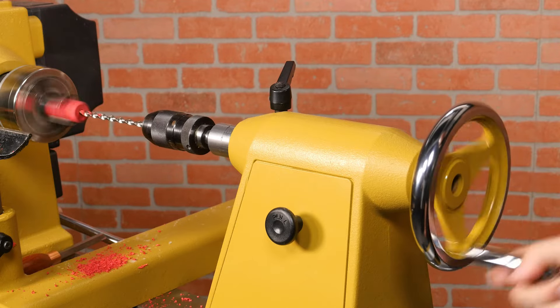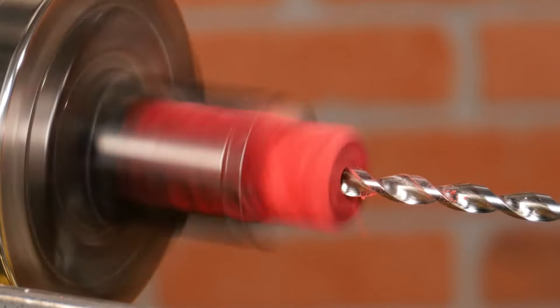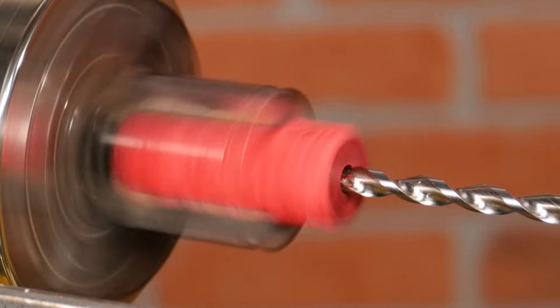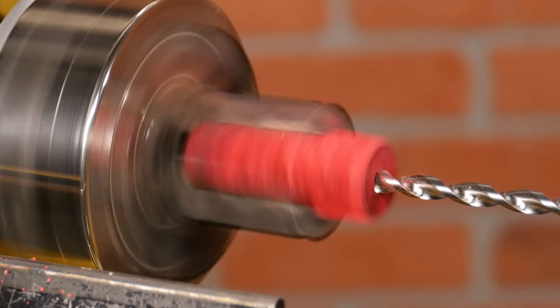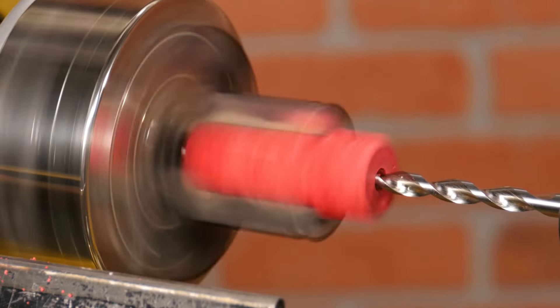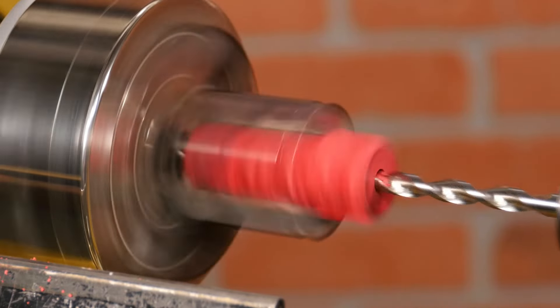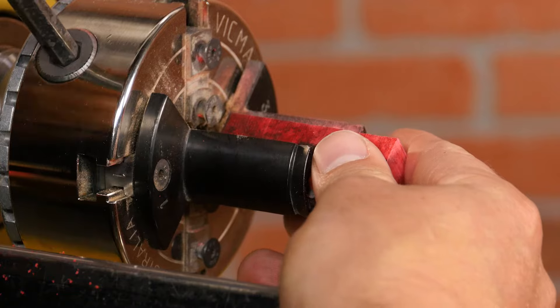Make sure to stop and back the drill bit out every half inch or so to clear the chips, keeping the blank from overheating. Continue until the bit exits the back of the blank, then repeat with the second blank.